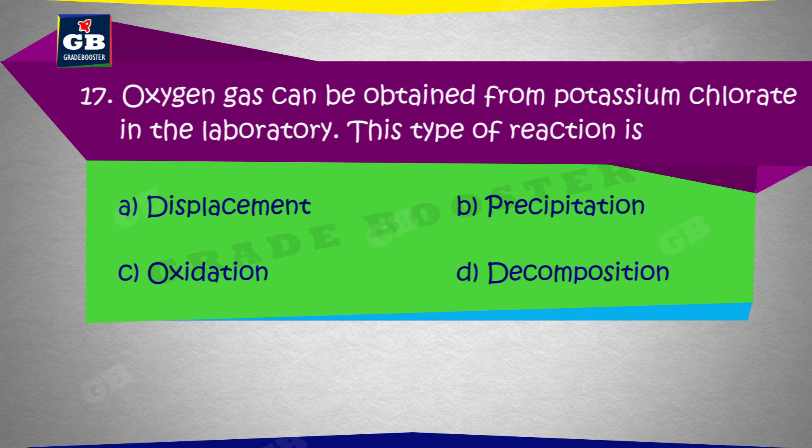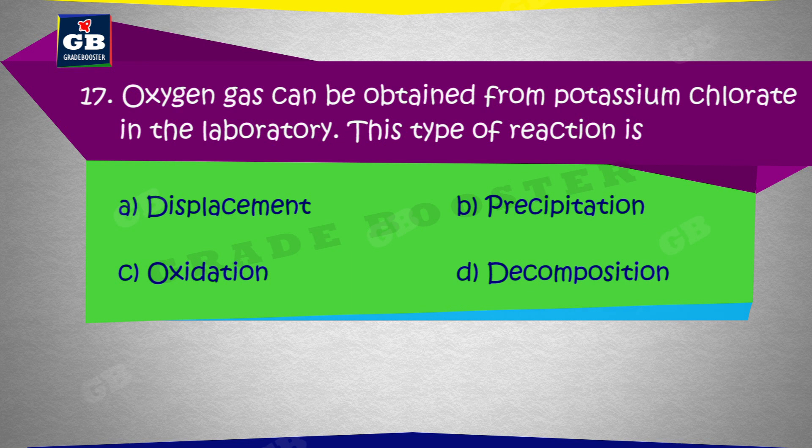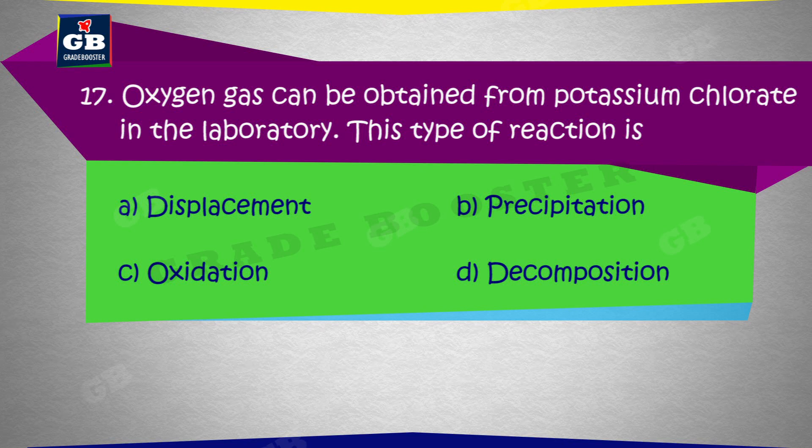Oxygen gas can be obtained from potassium chlorate in the laboratory. This type of reaction is: A. Displacement, B. Precipitation, C. Oxidation, D. Decomposition.